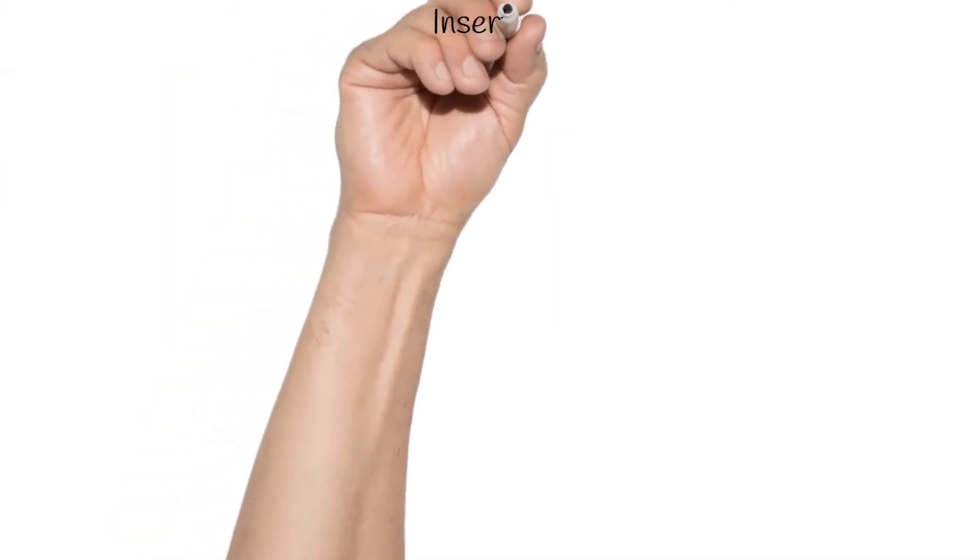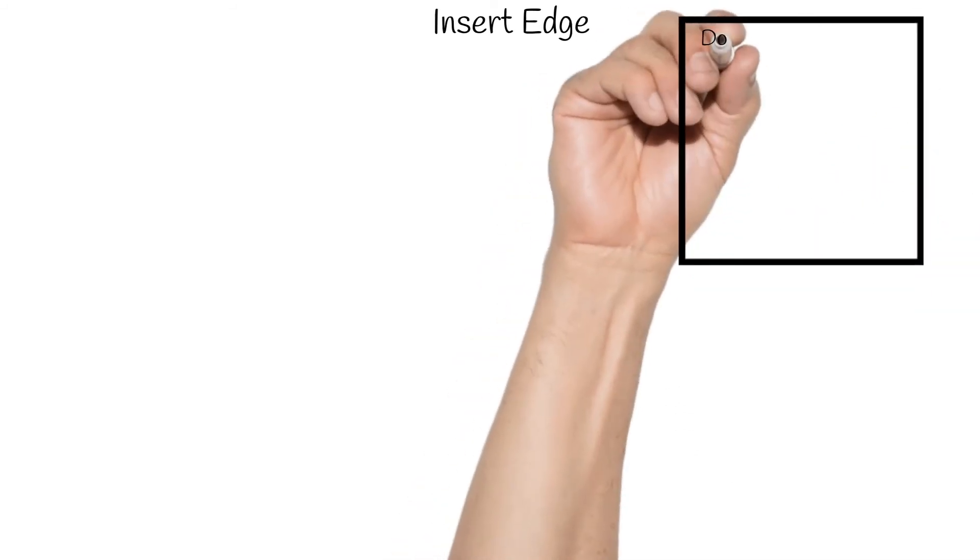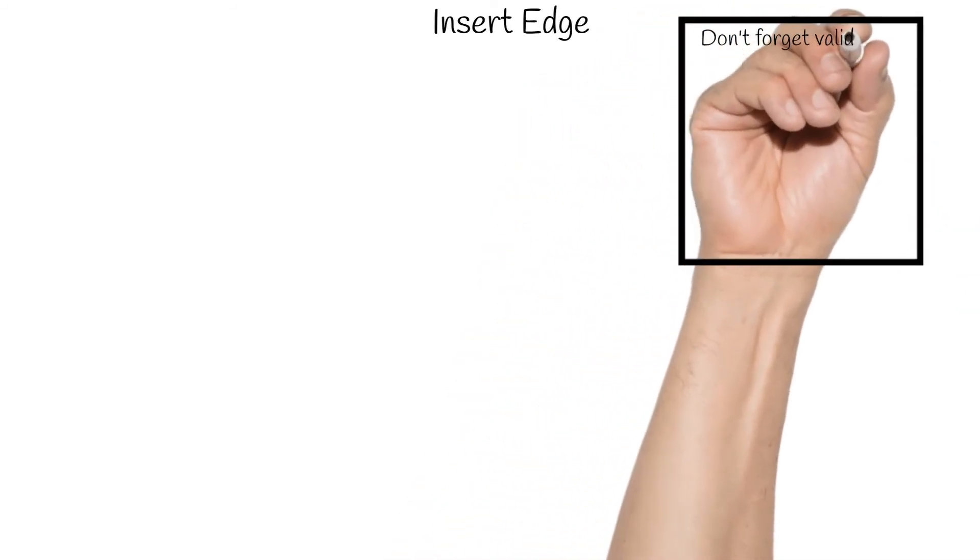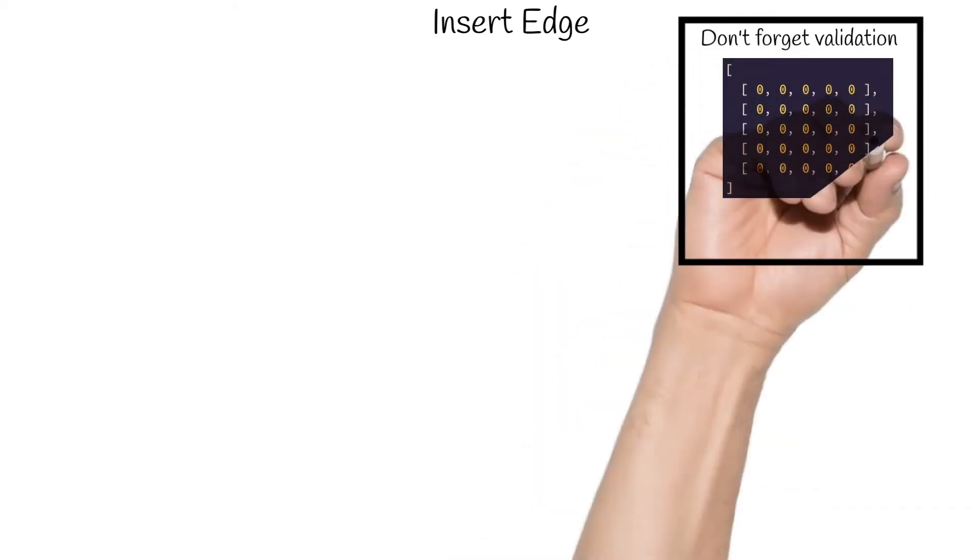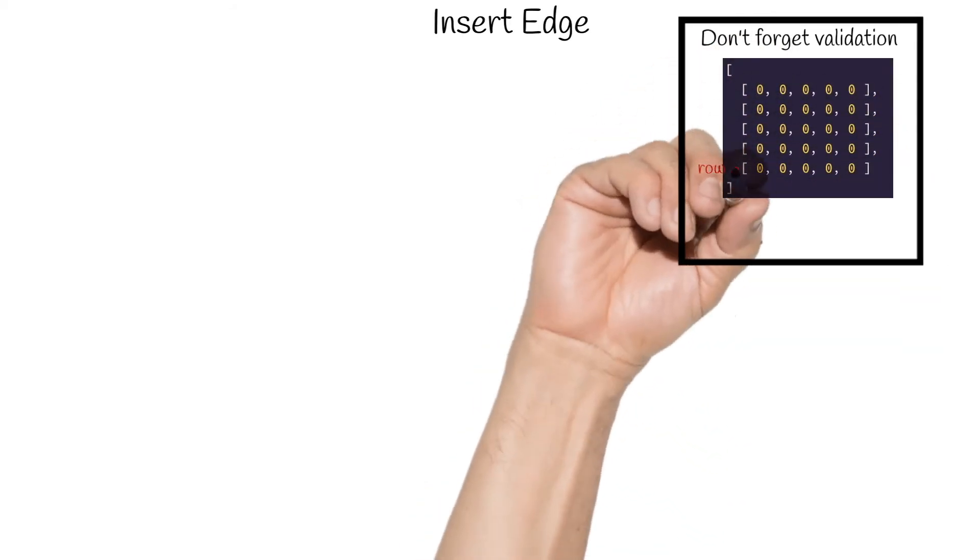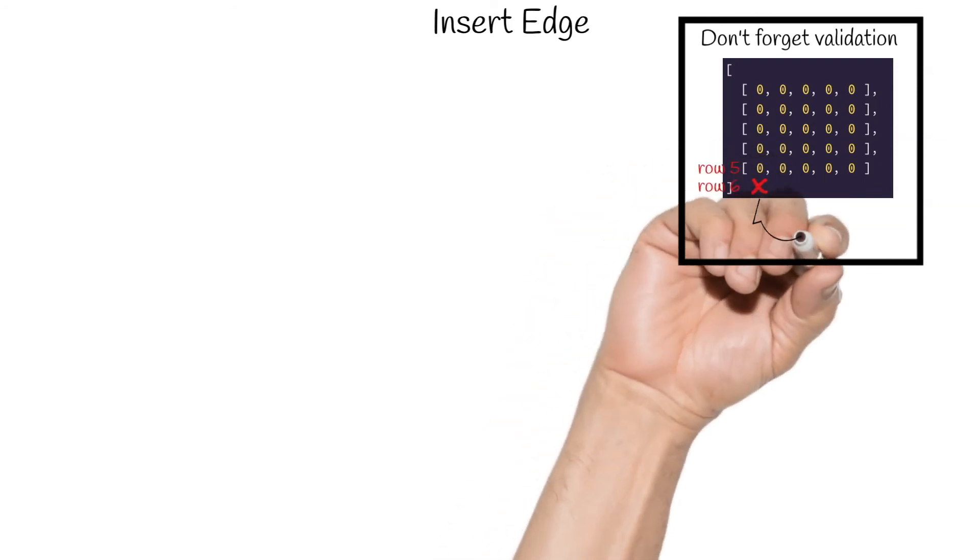Next, we will look at how to insert edges into the structure that we've created. For this demonstration, we will not do any validation in our insert function so that we can stay focused on the actual topic, but you should know that in practice, you will want to validate the arguments passed to your insert function. For example, if the arguments to your insert function contain row or column coordinates for nodes that do not exist in the matrix, you will want to return an error.